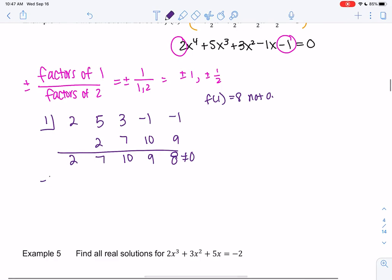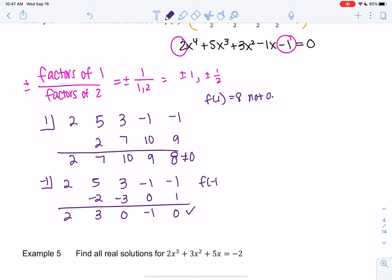So this one's not a zero. So let's try negative 1. So for some of us this might be easier than plugging in. 2, we get negative 1 times 2 is 2, we get 3, negative 3 is 0. So we get 0, negative 1, 1, 0. So f(-1) = 0.